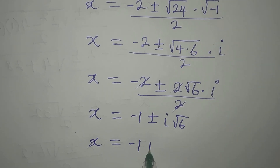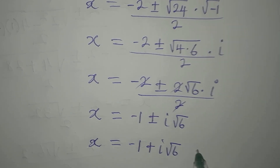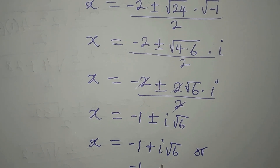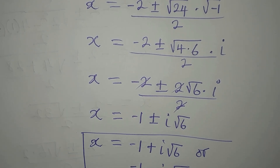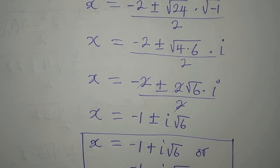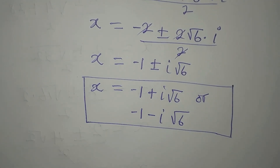So x equals minus 1 plus i root 6, or x equals minus 1 minus i root 6. From here we have two additional solutions. However, these are not real solutions — they are imaginary solutions. So the first two solutions are real, while these two are imaginary.